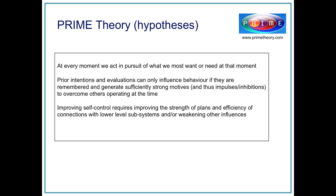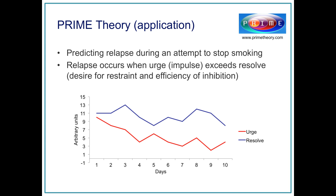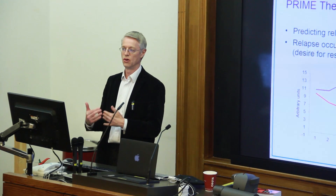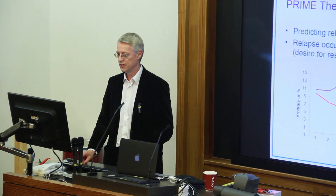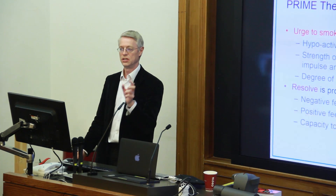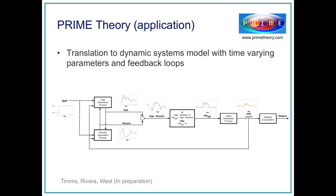There are a number of hypotheses that arise out of this, all of which are potentially testable, even though they're not part of a dynamic systems model. But you can also turn this theory into a dynamic systems model — I've been working with Daniel Rivera, who's a chemical engineer, and his colleagues to do that, predicting relapse following a quit attempt. If you take two key parameters from the model — urges, which are a mental representation of impulses, and resolve, which is a mental representation of inhibition and the sources that drive it — that can then be turned into a dynamic systems model.